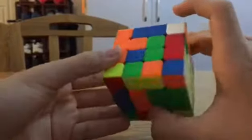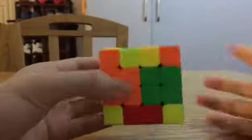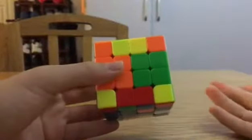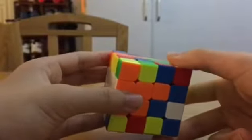And then he does a wide 3R, which is very useful in Yau solves because you want to keep this place open so that you can do U moves for center pairing, which is exactly what he did.